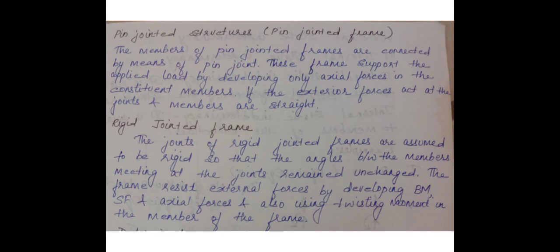Next is Rigid Jointed Frame. Here the joints are assumed to be rigid so that the angles between the members meeting at the joints remain unchanged. The frame resists external forces in the case of a rigid jointed frame by developing bending moment, shear force, axial force, and also sometimes twisting moment in the members of the frame. These are the actual frames which we use for analyzing.